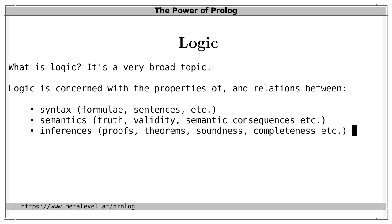Ideally, the inference rules are defined such that everything that can be derived — every theorem — is a semantic consequence of the axioms. This property is called strong soundness. And it is great if the converse also holds: if every semantic consequence can be derived by syntactic inferences as a theorem. This property is called strong completeness.